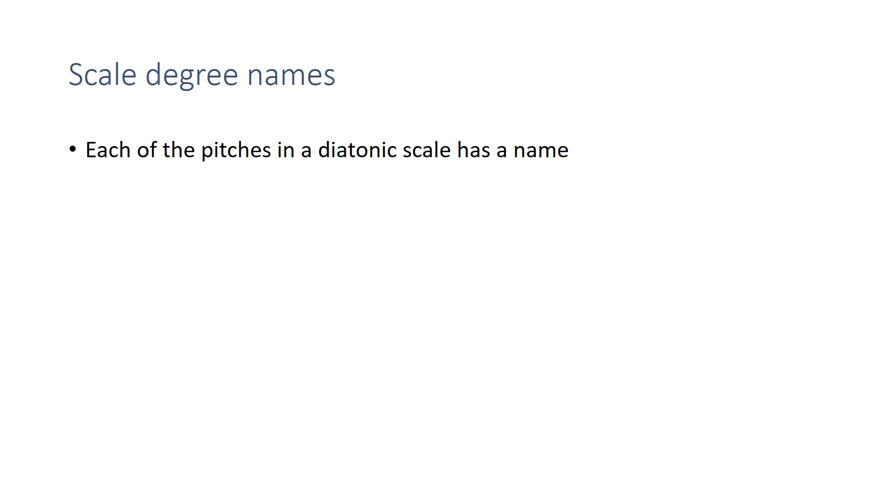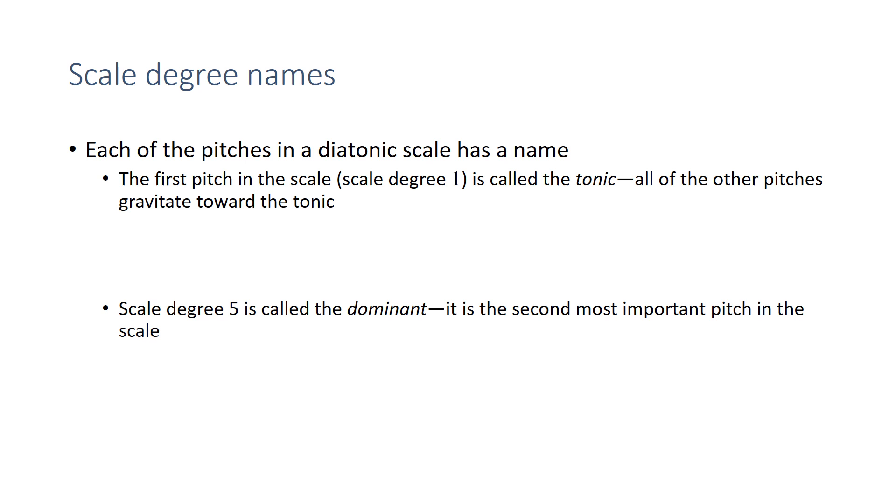Now I want to talk a little bit about the names for the scale degrees. Of course, you can refer to scale degrees by their number: scale degree 1, 2, 3, 4, 5, 6, 7. But each one of these pitches in a scale also has a name that kind of explains their function in the scale. So the first pitch in the scale, and also the most important pitch, is the tonic. This is scale degree 1. All the pitches sort of gravitate towards this tonic pitch. The next most important pitch in the scale is called the dominant scale degree, scale degree 5. And it moves towards the tonic.